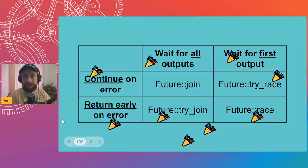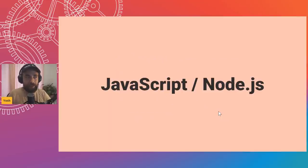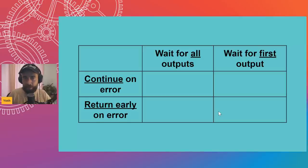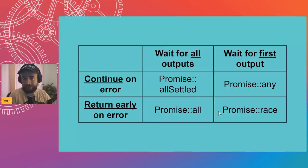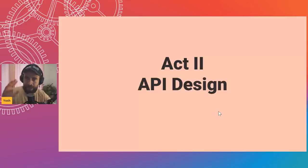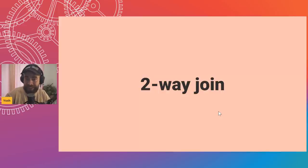Other languages have concurrency methods as well. In JavaScript/Node.js you can plot the Promise methods out in the same matrix: Promise.allSettled, Promise.race, Promise.all, and Promise.any in the top-right corner — they all do the same thing and were all stabilized last year. Now we have a framework for the various concurrency modes, and we can dig into API design. Some of these things are already available in libraries like async-std and futures-rs, but we're trying to figure out ways to stabilize them in the standard library — and I think we can do better with API design.